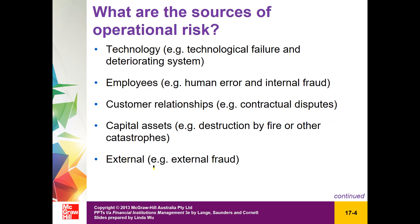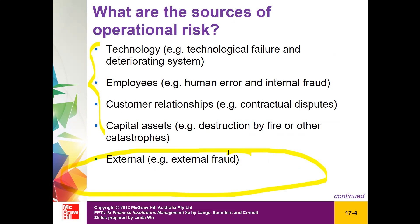There are at least five sources of operational risk: technology, employees, customer relationships, capital assets, and external. The first four are internally controllable by financial institutions' management, whereas the fifth — external risk — is not controllable, although financial institutions' systems can build in security safeguards, giving some but not complete control. Increasingly important to the profitability and riskiness of modern financial institutions is technology. In the next video, we will discuss technological innovation's impact on profitability and also technology's impact on financial institutions' service production. Thank you.